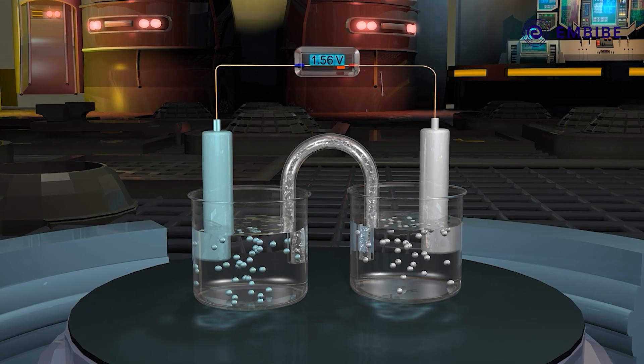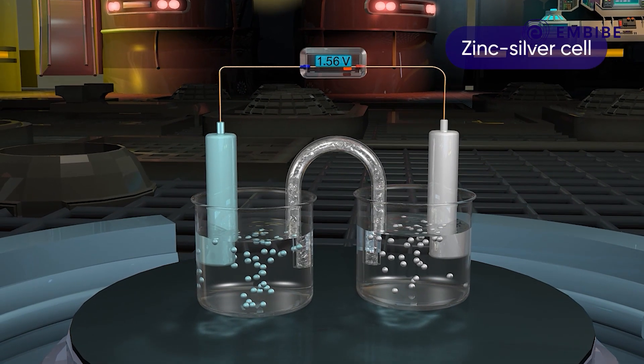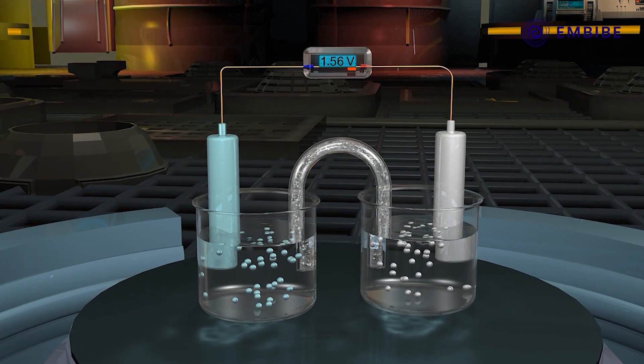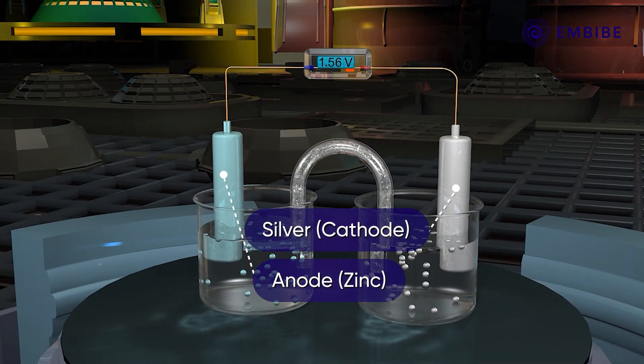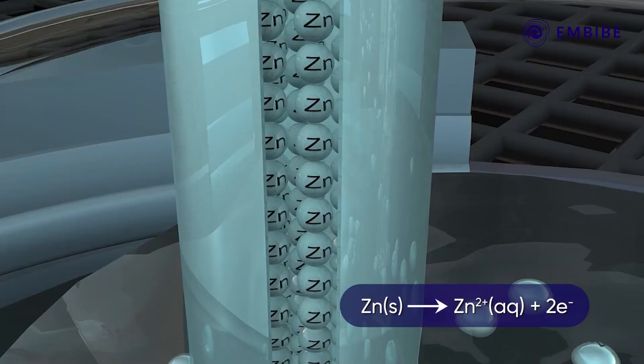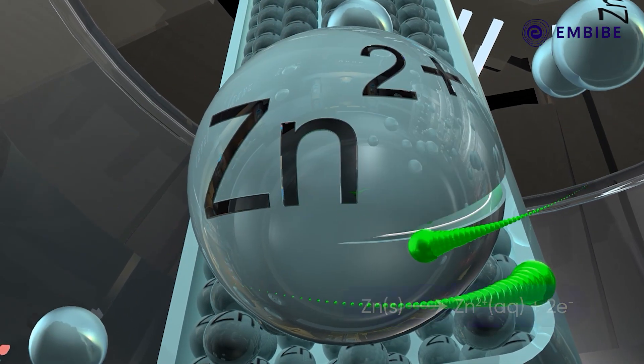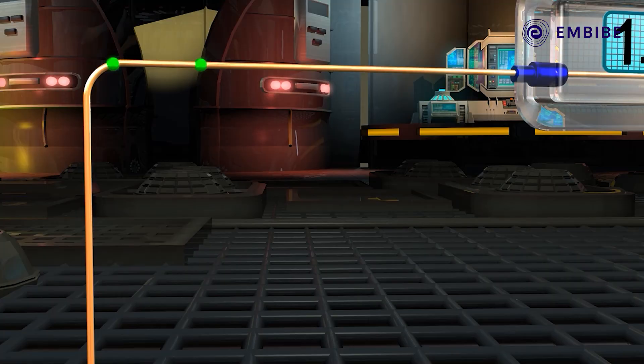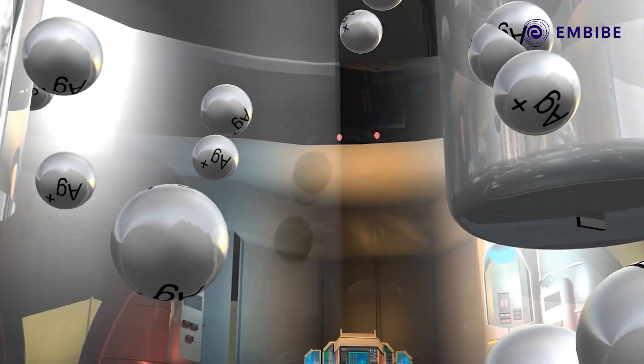Consider a zinc-silver cell operating at standard condition. Here zinc acts as an anode and silver acts as a cathode. At the anode, zinc loses two electrons and gets oxidized to give Zn²⁺ ion. The released electrons travel through the external circuit and reach the cathode.